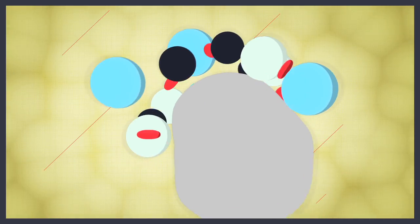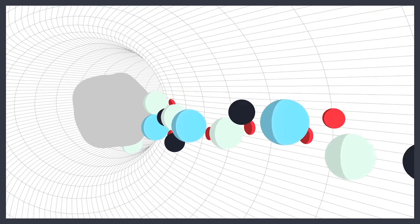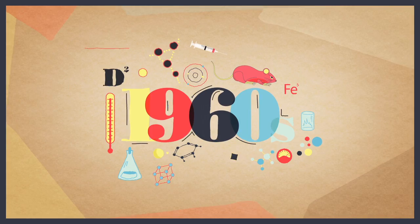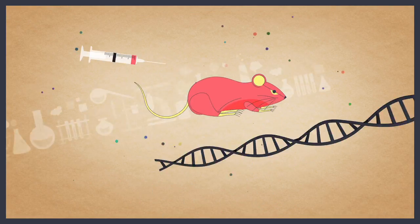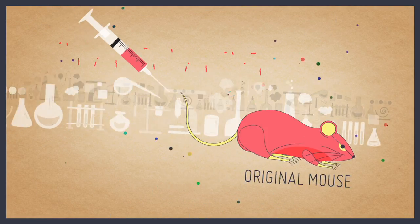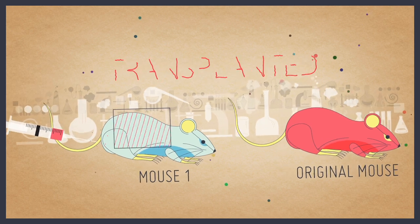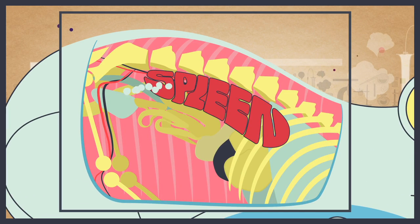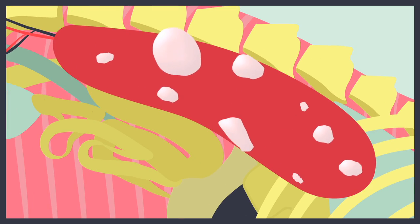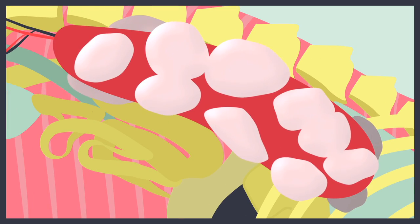Bone marrow contains many different types of cells, several of which have specialized roles in the blood. In the early 1960s, it was shown that if bone marrow was taken from one mouse and transplanted into another, rare and specialized cells could travel to the spleen where they would divide and form small colonies.